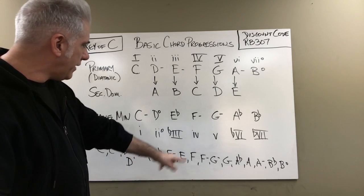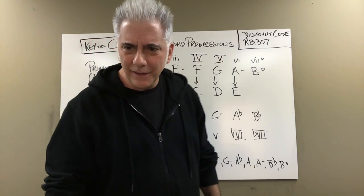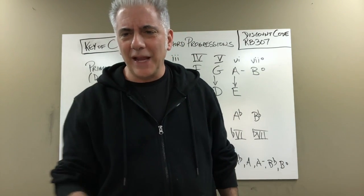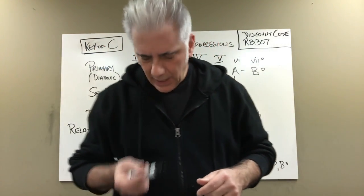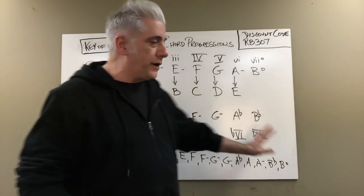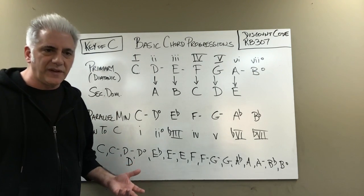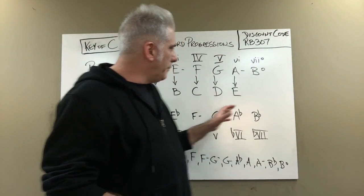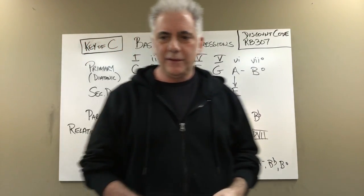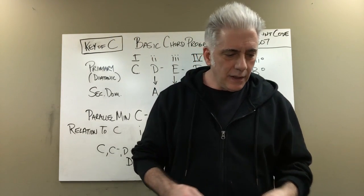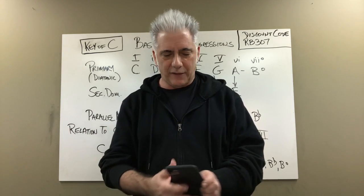One, two, three, four, five, six, seven, eight, nine, ten, eleven, twelve, thirteen, fourteen, fifteen, sixteen, seventeen — there are seventeen different chords. If you know this formula — and it's all in my Beato Book, which is really the best way to memorize it — knowing major keys, minor keys, secondary dominants: you've got most chord progressions covered.